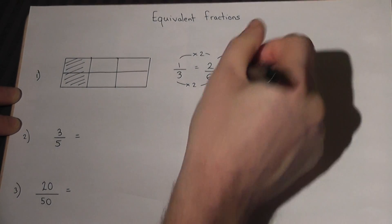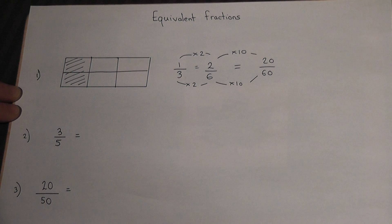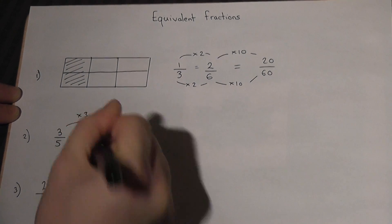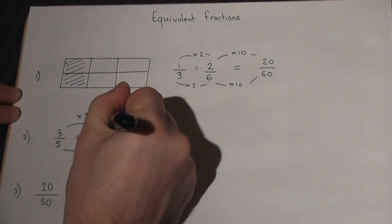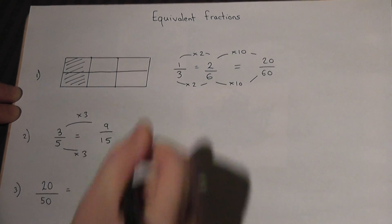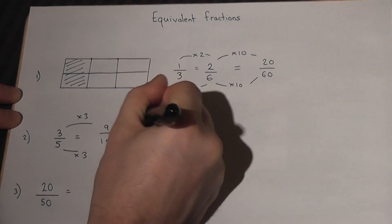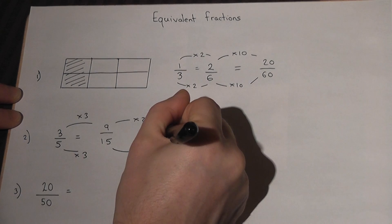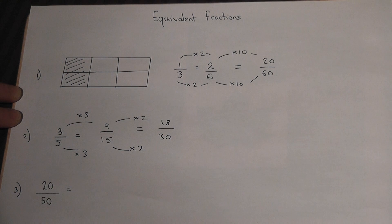And all these fractions are all equivalent. So if I was asked to find some fractions equivalent to three fifths, I can times it by any number I like. For example, I could times it by three as long as you times the top and bottom by the same number. So 3 times 3 is 9 and 5 times 3 is 15. These fractions are therefore equivalent. And another one, I could times by 2 top and bottom, the answer becomes 18 over 30. All these fractions are equivalent.